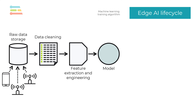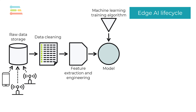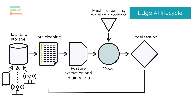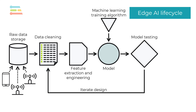You use a machine learning algorithm to train the model. You then test and iterate as needed to get a model that can provide predictions and insights about the data as accurately as possible. Once you are happy with the performance, you then deploy the model.